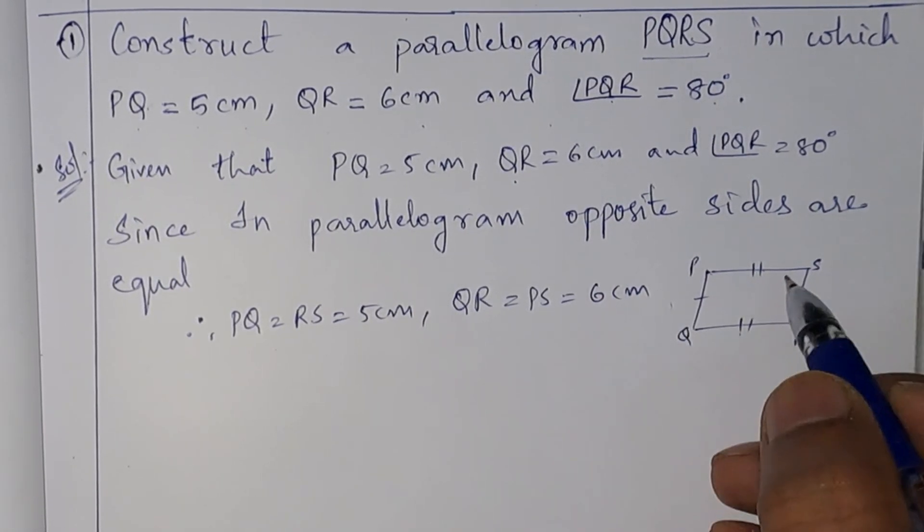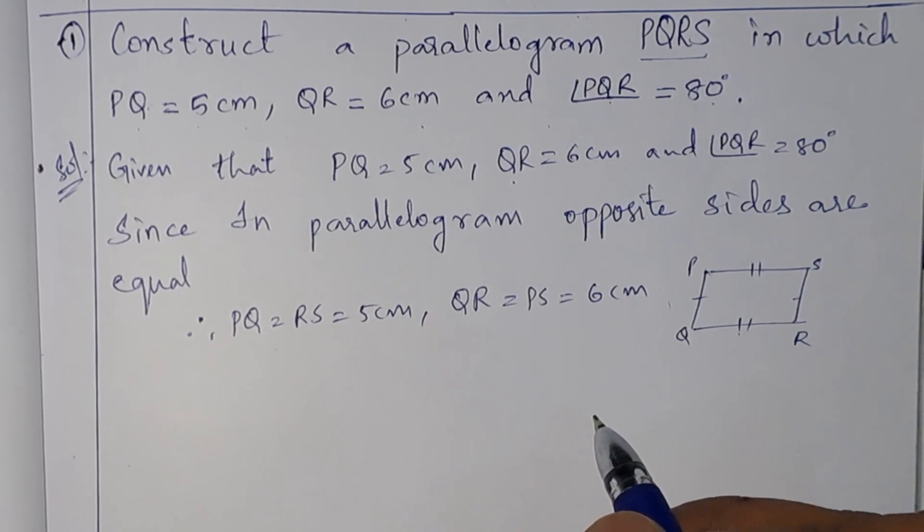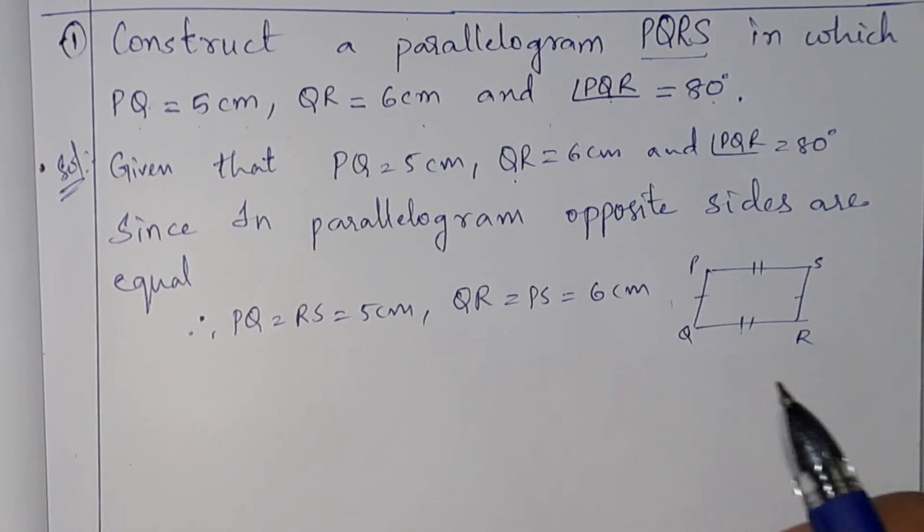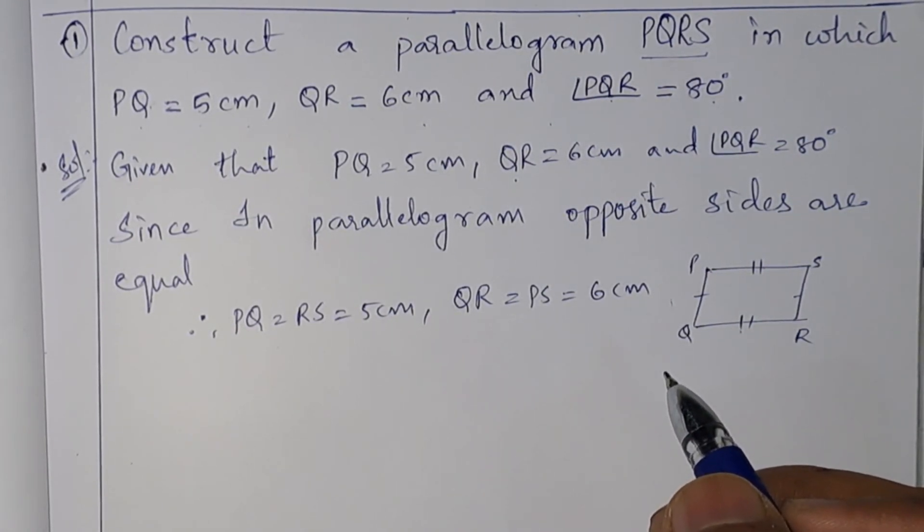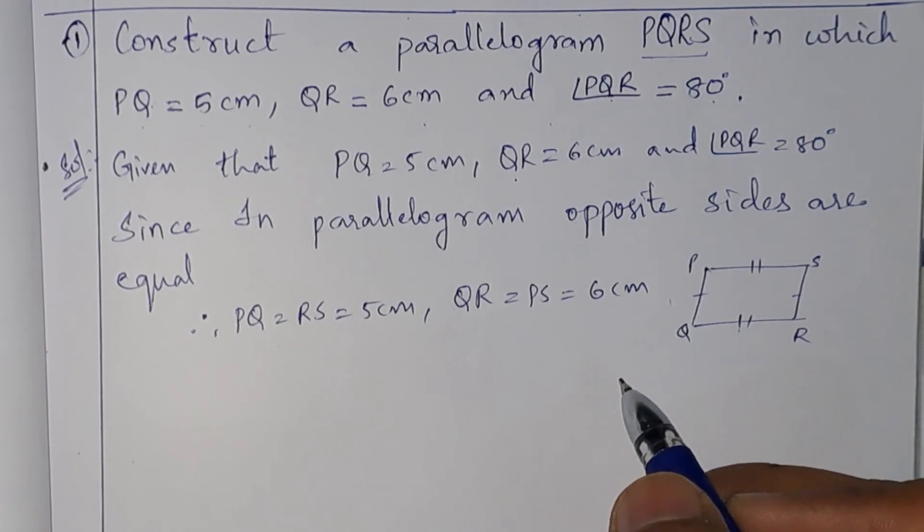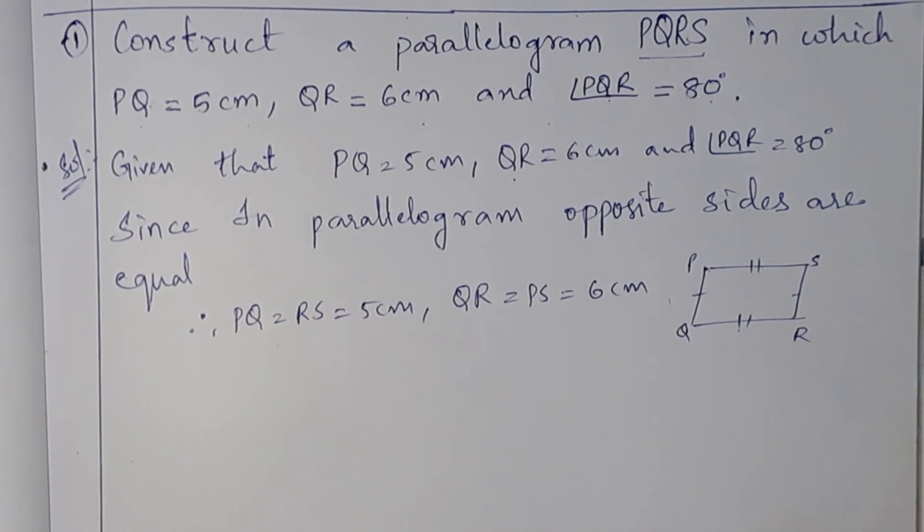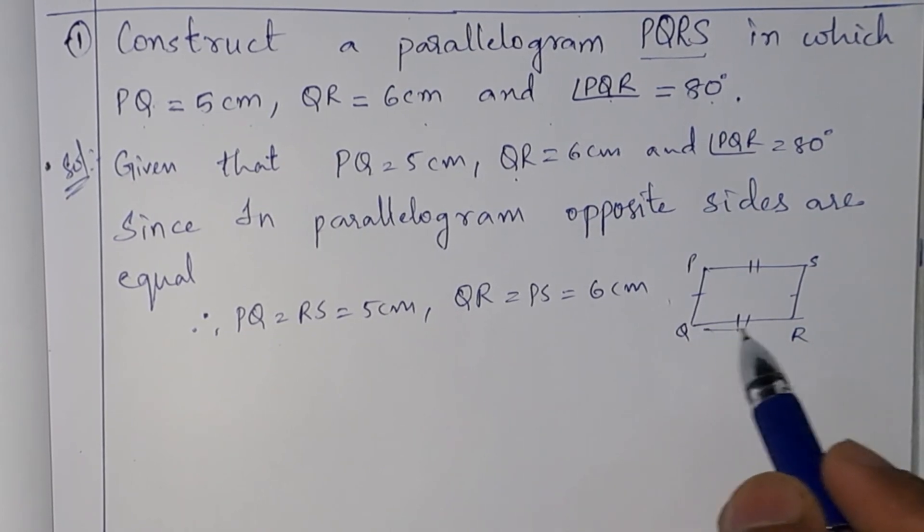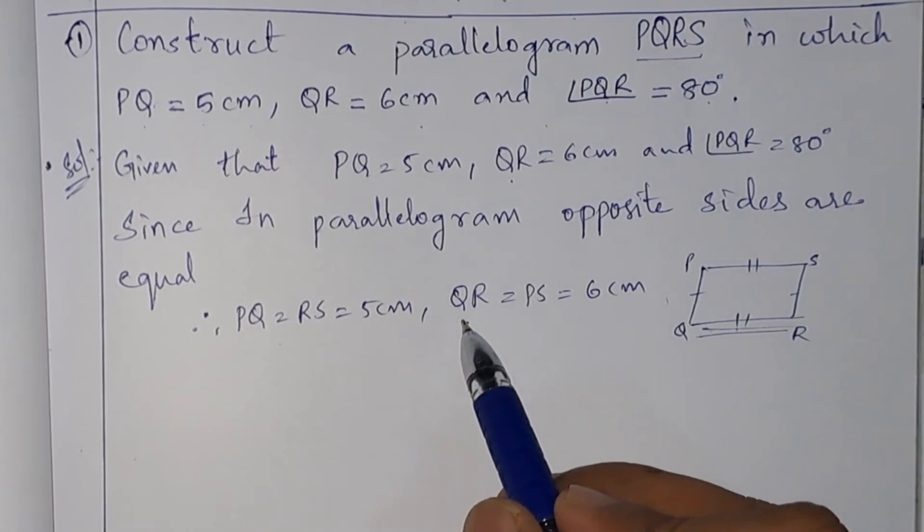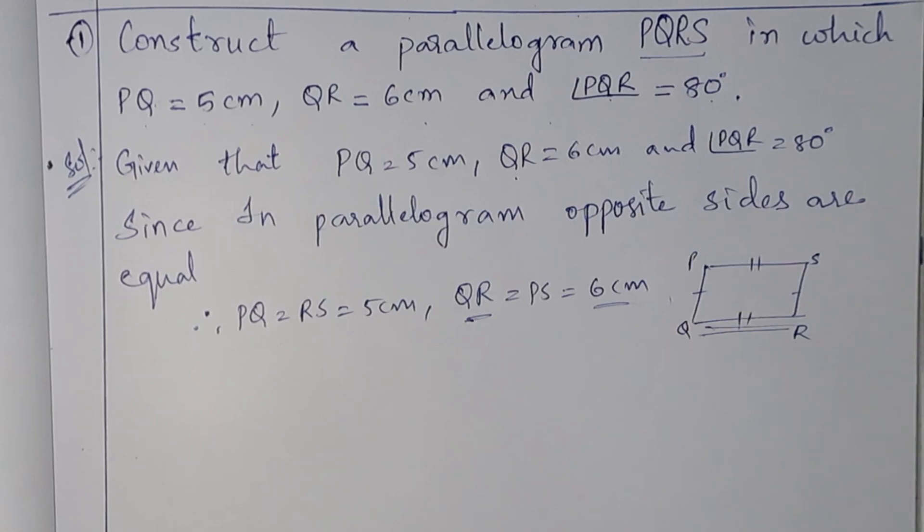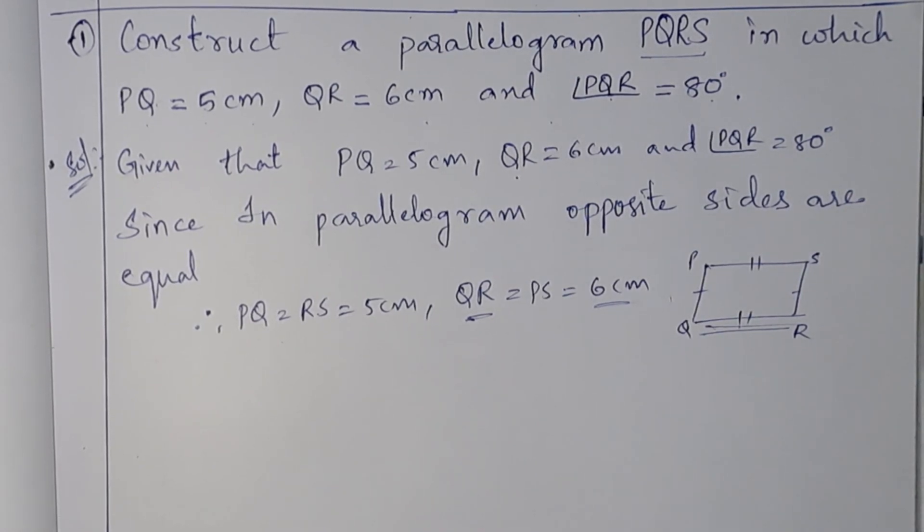So these are the opposite sides. Now we have all four sides. Now let us draw the parallelogram. For that, let us consider the base QR. For QR we can draw a line segment of 6 centimeters.